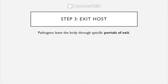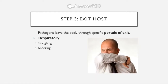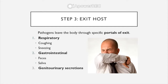Step 3: exiting the host. Pathogens have to leave the body through specific portals. The respiratory and GI tracts are the most common portals. Respiratory tract exit can involve coughing and sneezing — we should protect others by covering ourselves when we cough and sneeze, ideally using a sleeve rather than hands. The gastrointestinal tract can exit via feces or saliva. The genitourinary tract includes the genital and urinary systems, and number four is skin or wound drainage.